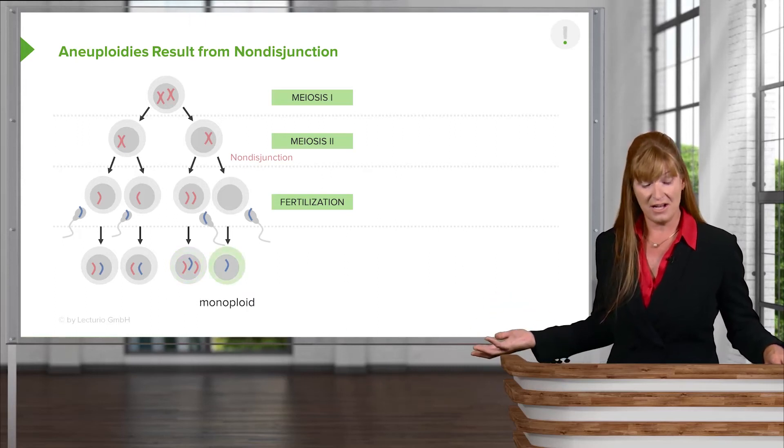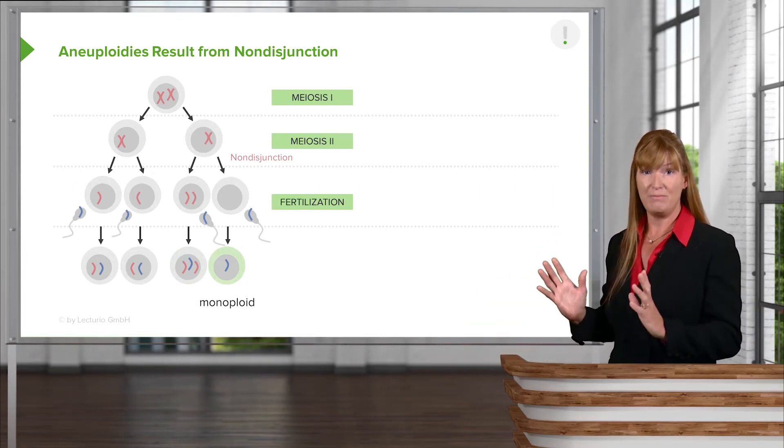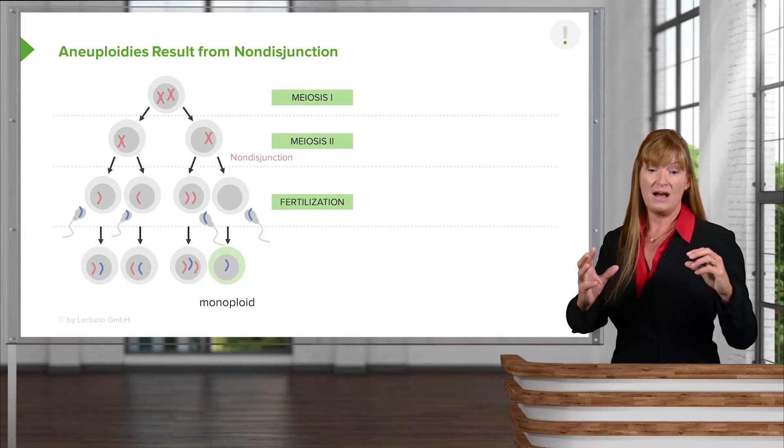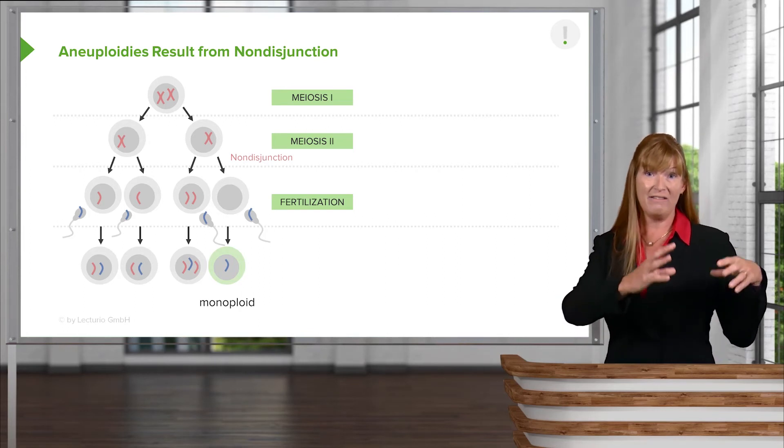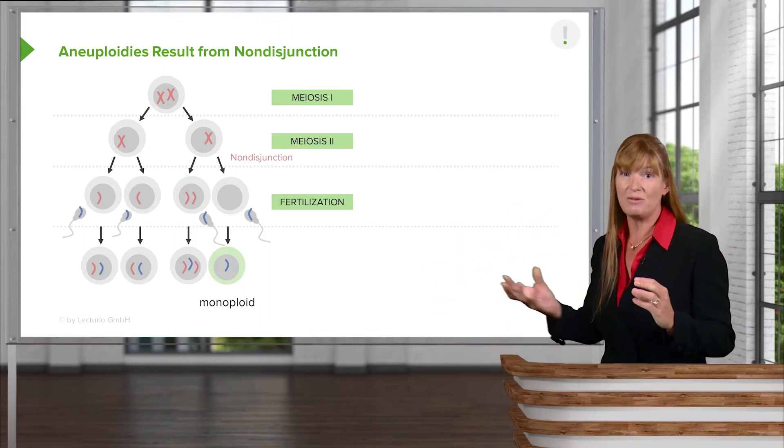Now, the monosomy tends not to survive. And again, recall we talked about there being the perfect amount of gene product. In the Goldilocks principle, we have a large bowl. It's too much gene product, doesn't work out. Too little gene product, doesn't work out. But the perfect amount of gene product is what we're looking for.